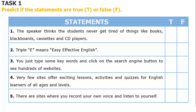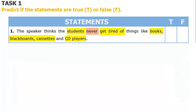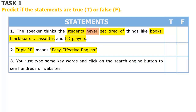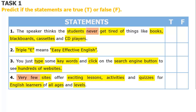Look at the first sentence — what should we focus on? Apparently, we have: Students, Never get tired of, Books, Blackboards, Cassettes, and CD players. In the second sentence: Triple E, and Easy Effective English. Which words and phrases do we pay attention to in the third sentence? Keywords: Click, Search engine button, and Hundreds of websites. For sentence number 4: Very few sites, Exciting lessons, Activities, Quizzes, English learners, All ages, and Levels should be highlighted.